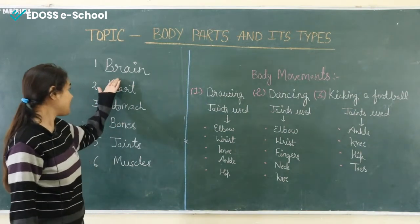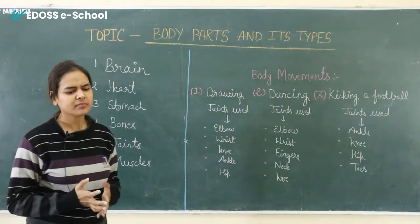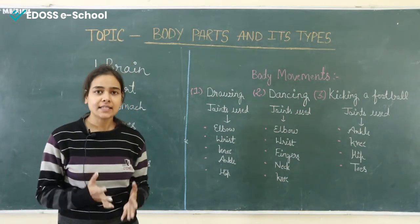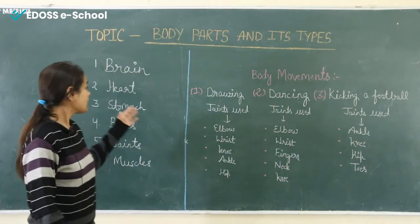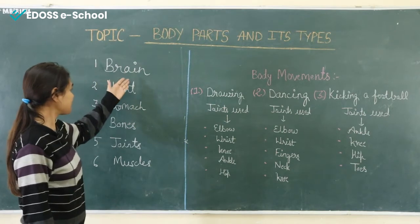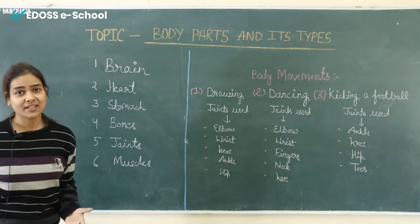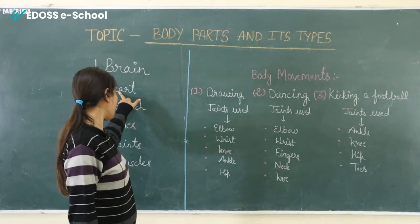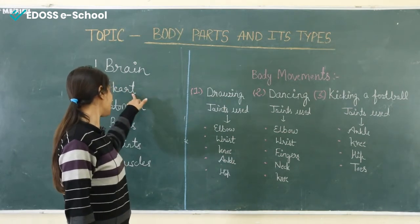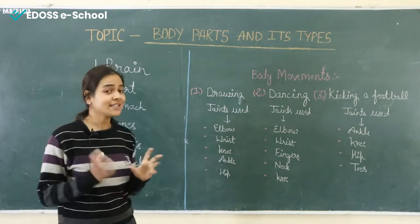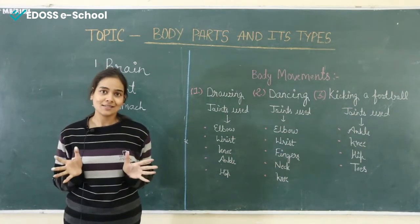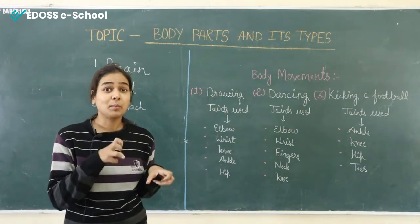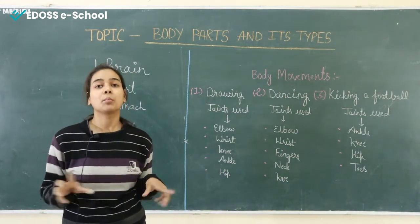The first one is brain. What is brain? It is located within our skull and it controls all the organs and all the body parts. The second one is heart. What is heart? It is made up of muscles and it pumps blood through the complete body.